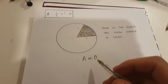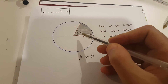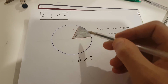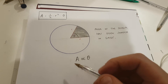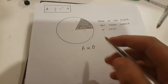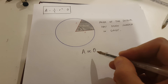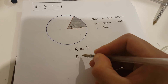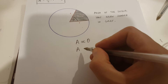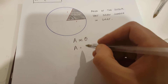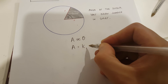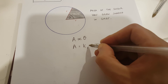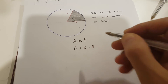The larger this angle becomes, the greater the area of this sector becomes. Now since A is proportional to theta, A, which is the area of the sector, is going to be equal to k1, which is a constant of proportionality, times theta.